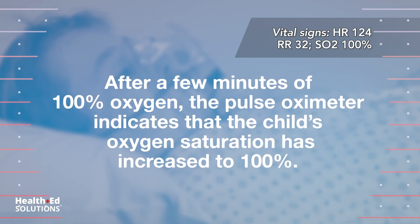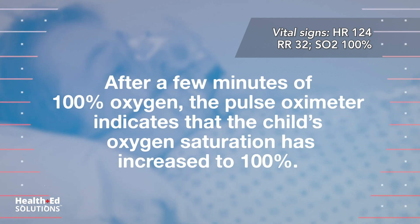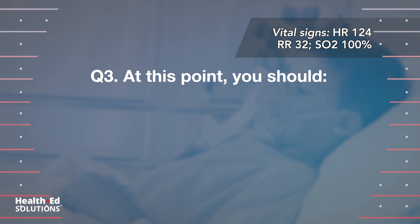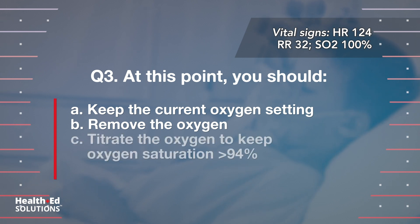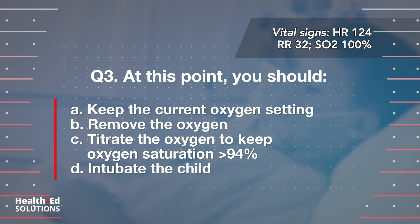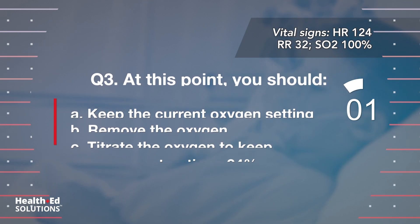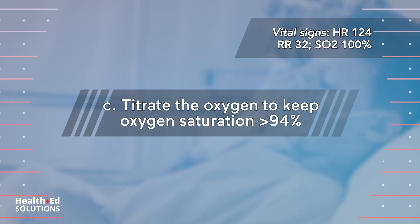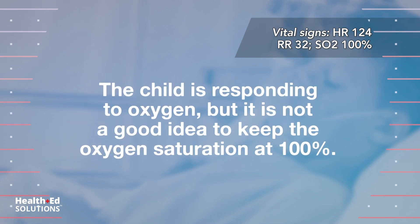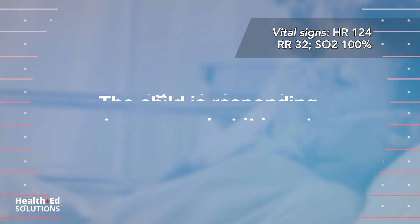After a few minutes of 100% oxygen, the pulse oximeter indicates that the child's oxygen saturation has increased to 100%. Question 3: At this point you should: A) keep the current oxygen setting; B) remove the oxygen; C) titrate the oxygen to keep oxygen saturation greater than 94%; D) intubate the child. Correct answer C — titrate the oxygen to keep oxygen saturation greater than 94%. The child is responding to oxygen, but it is not a good idea to keep oxygen saturation at 100%; begin to turn the oxygen concentration down.